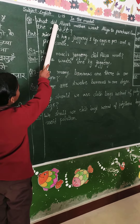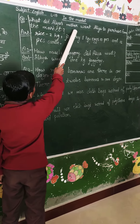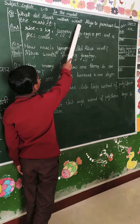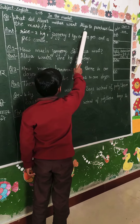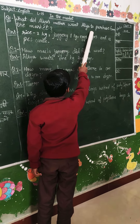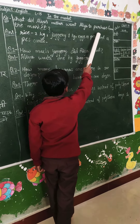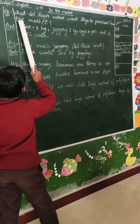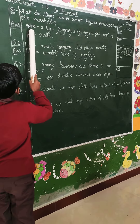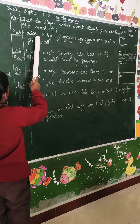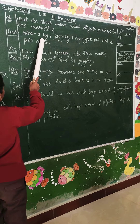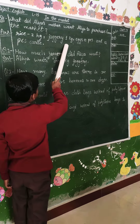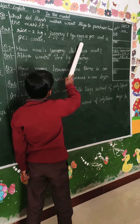What does Aria want to purchase from the market? Aria wants to purchase: Rice - 2 kg, Jaggery - 1 kg.